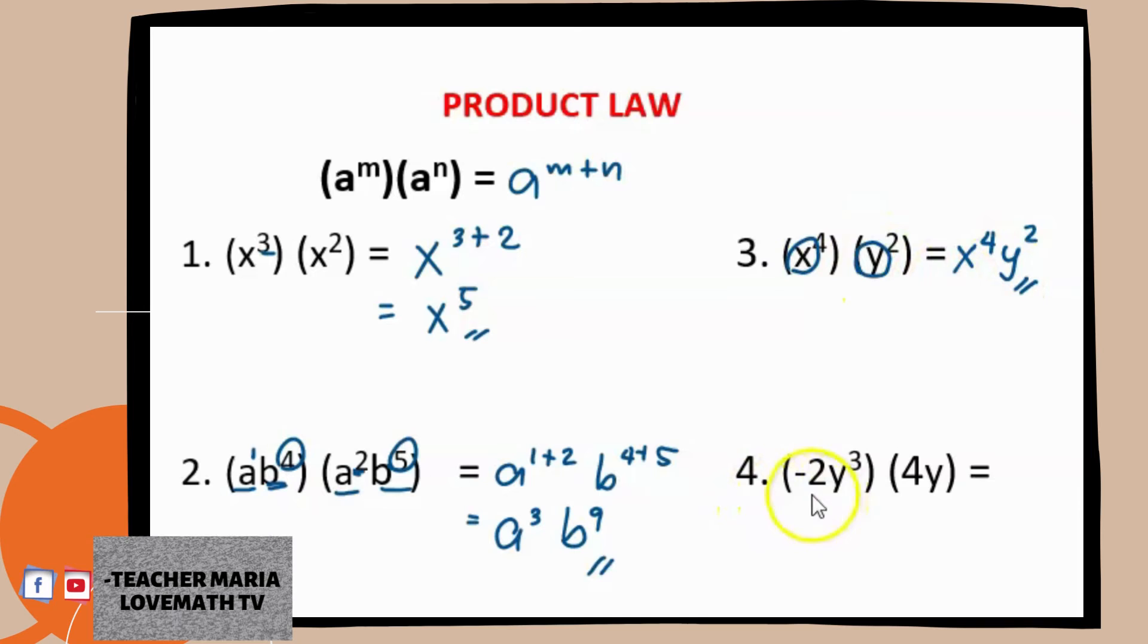Now for number 4, we have here numerical coefficients. We have negative 2 and 4. Before going to the base of y, we just have to get the product first of the numerical coefficients. So we have negative 2 times 4. That's correct. Negative 8.